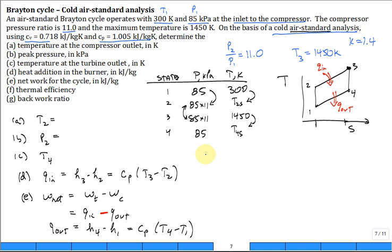What about F, the thermal efficiency? It's the net work, that's the answer for part E divided by Q in, the answer from part D.